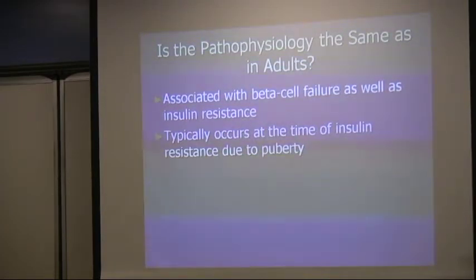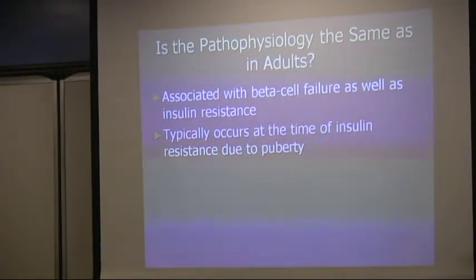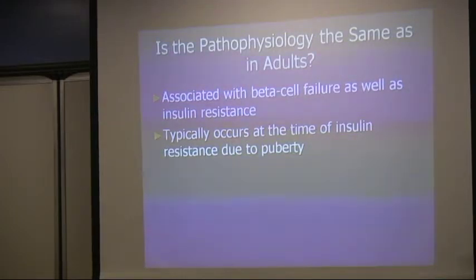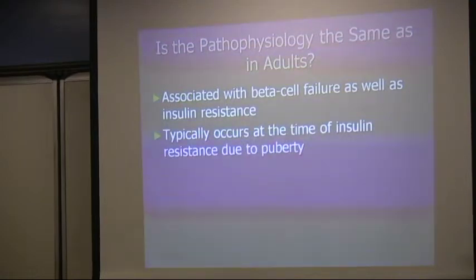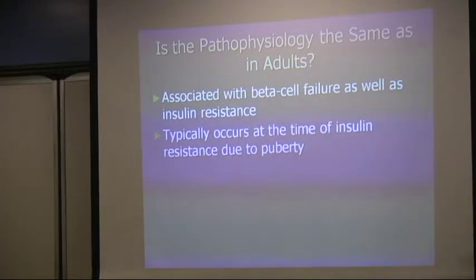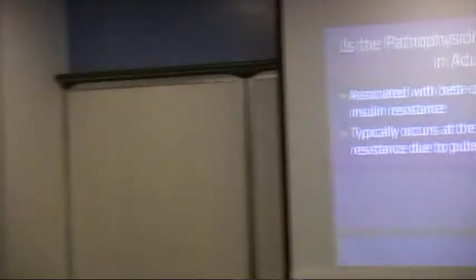The course of type 2 diabetes in children may relate to its mechanism. Because of this additional component of beta cell failure in children, the course can be more aggressive. Importantly, type 2 diabetes in the pediatric and adolescent population typically presents during puberty, when there is a natural buildup of insulin resistance — from insulin itself but also from other hormones. Growth hormone, secreted in higher amounts during puberty, has a well-defined effect of decreasing insulin sensitivity and creating higher risk for elevated glucose levels.